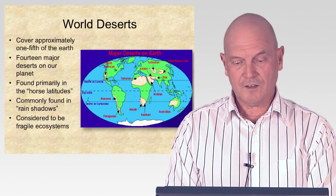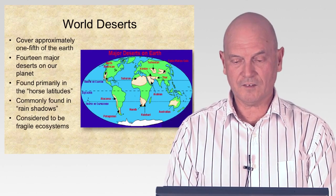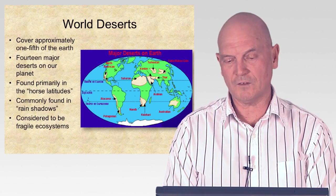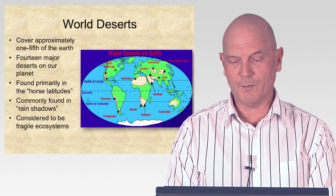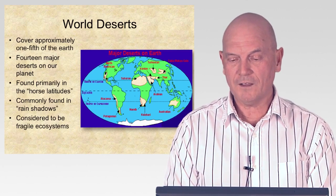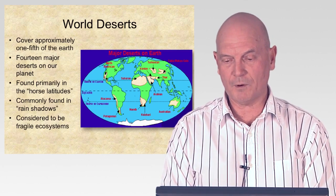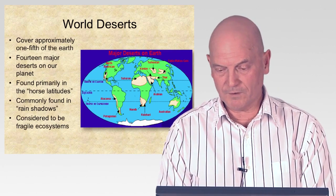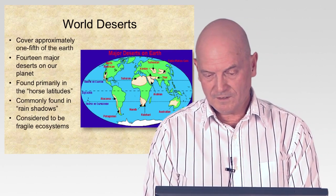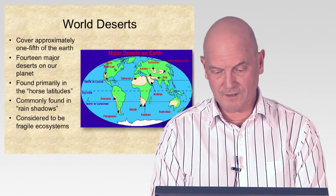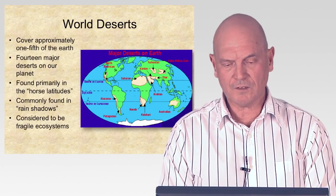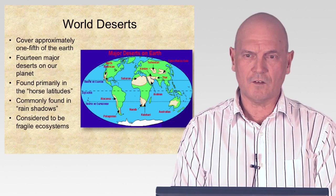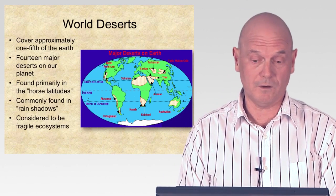There are 14 major deserts. The more famous ones in North America are collectively called North American deserts. You've probably heard of the Sahara and the Arabian Desert, the Thar, the Turkestan, the Gobi Desert, deserts in Australia, the Kalahari Desert, the Namib Desert, and then Patagonia and the Atacama. I'll mostly focus on the deserts in North America.